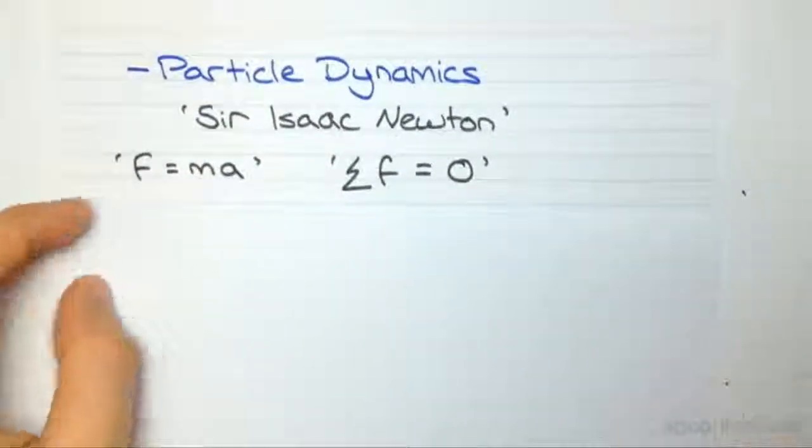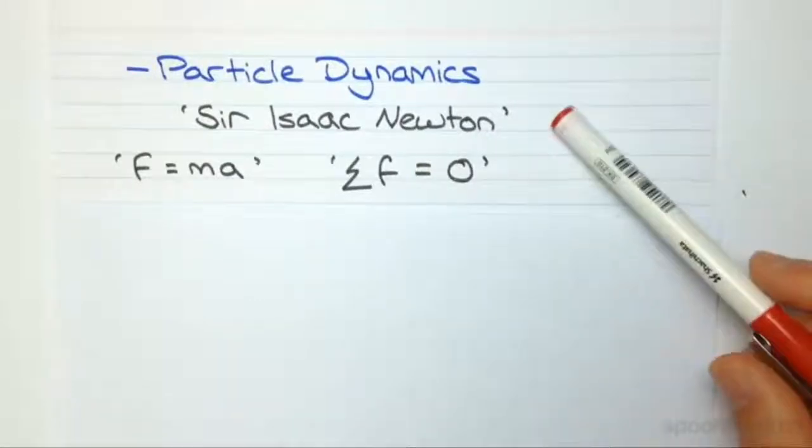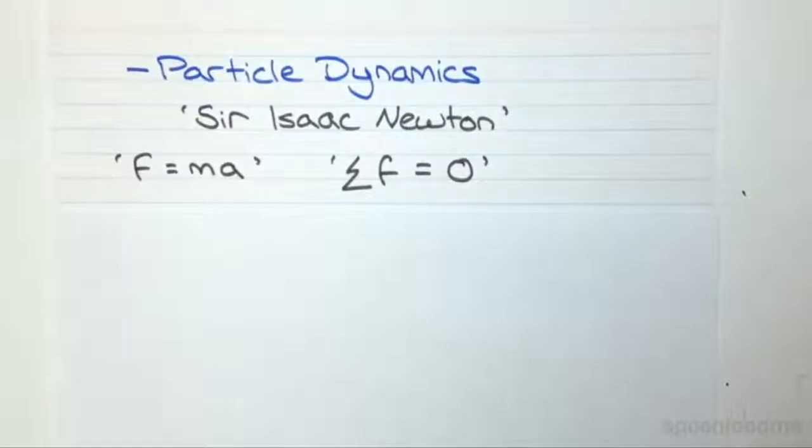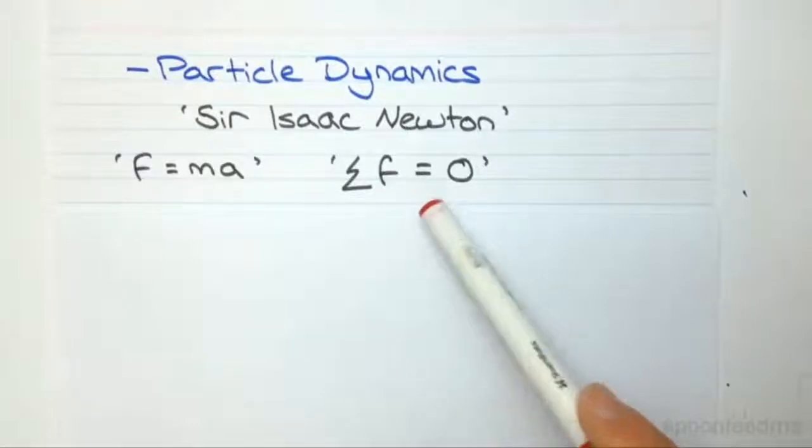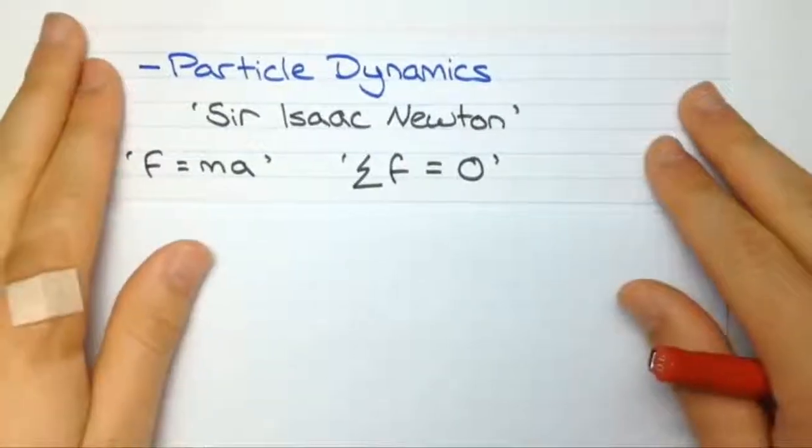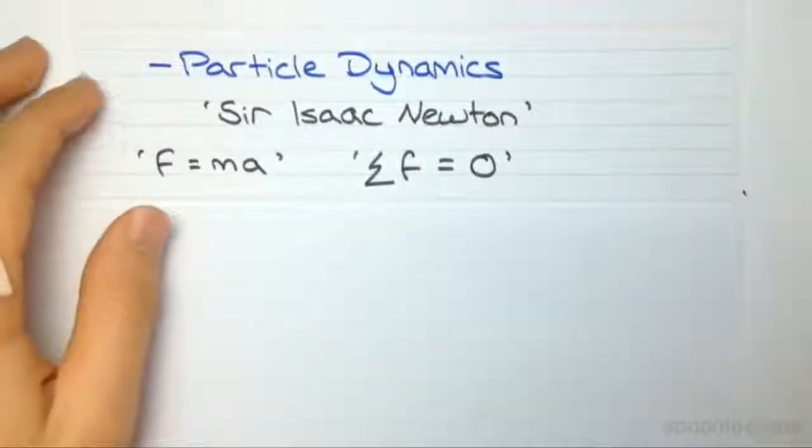We then move on to a new topic called particle dynamics, where we look at the work of a man named Sir Isaac Newton, and how he described motion. We are introduced to forces and the Newton equation, such as F equals ma, and this equilibrium equation, which states that the net force acting on a body is equal to zero if a body is in equilibrium. Right, so these two equations we're going to see a lot of times throughout the course.